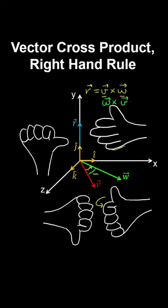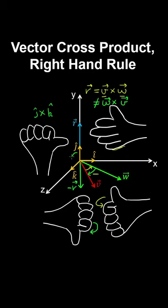In contrast, if you want to cross W with V, you curl your fingers from the first vector W to the second vector V, as shown using your right hand. In this case the resulting vector R points downwards, so the cross product is not commutative. Similarly, for the cross product of J and K, curling your fingers from J to K gives a resulting vector pointing in the direction of I.